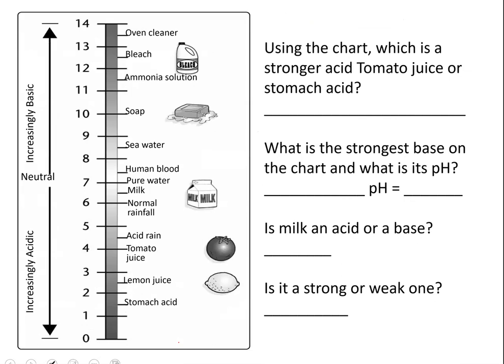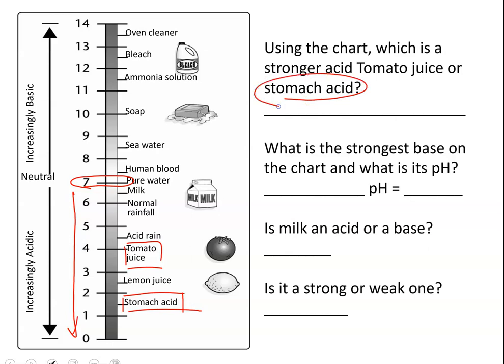For test purposes you'll want to answer questions like: which is a stronger acid, tomato juice or stomach acid? Here's 7 — neutral. As we go down from neutral, all of these are acids, but the lower the pH goes, the stronger the acid. Tomato juice is higher up, but stomach acid is all the way down closer to 1, so stomach acid is the stronger acid.